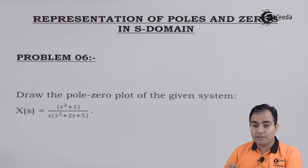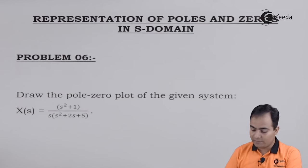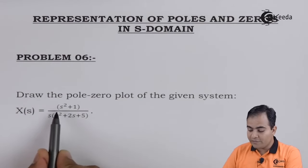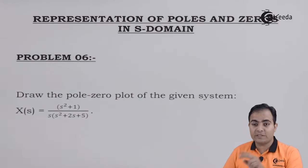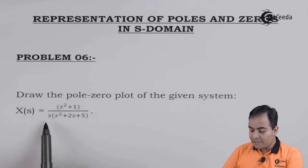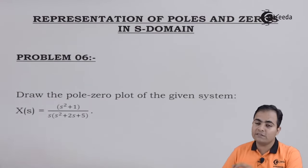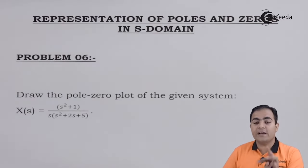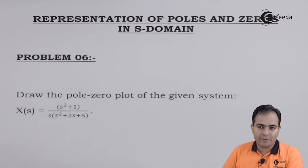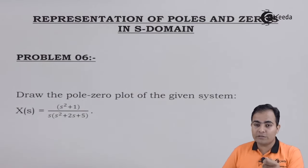First, we will find the order of s in the numerator and in the denominator. In the numerator we have s², which means there are two zeros present. In the denominator, if we multiply s inside the bracket, the highest power of s is s³, which means we have three poles. We will calculate the factors to find the locations of the poles and zeros.